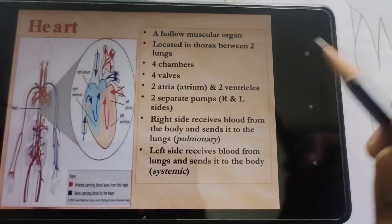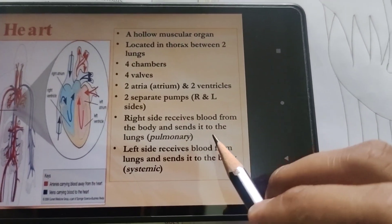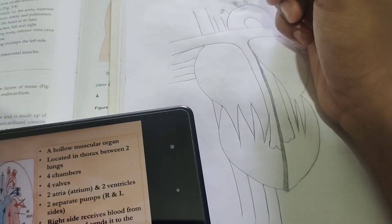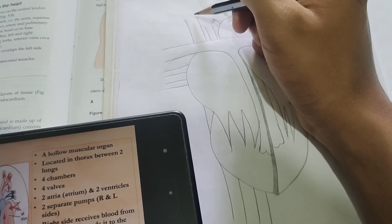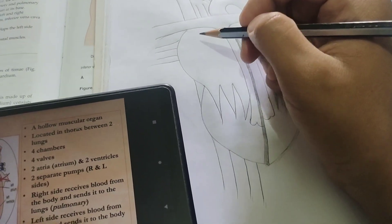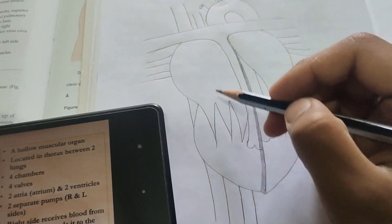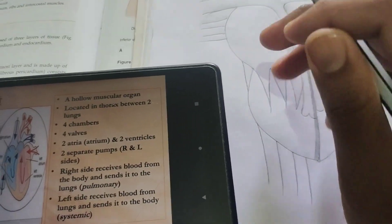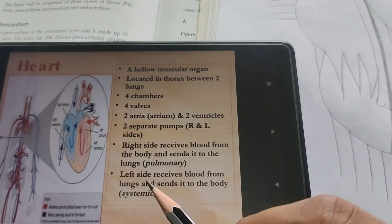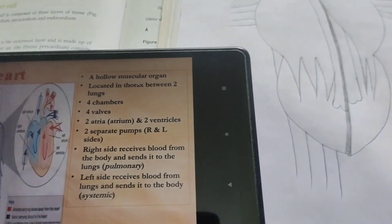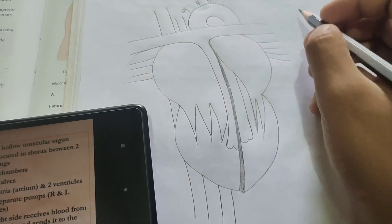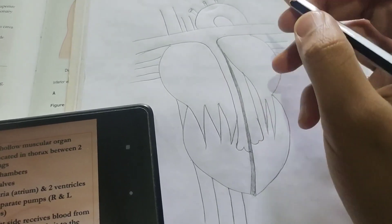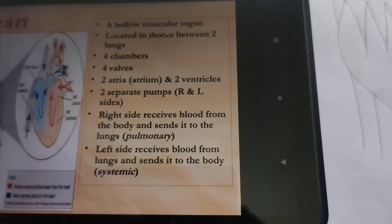The right side of the heart receives blood from the body and sends it to the lungs through the pulmonary artery. This cycle is known as pulmonary circulation. The left side receives blood from the lungs through the pulmonary veins and sends it to the body parts through the aorta. This circulation is also known as systemic circulation.